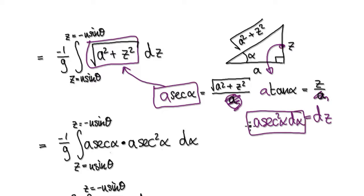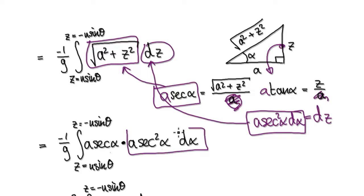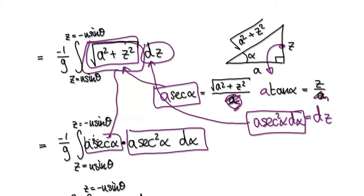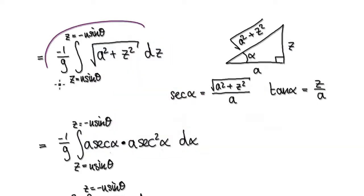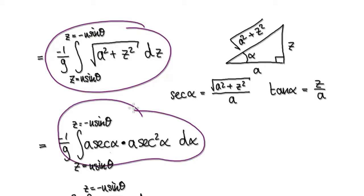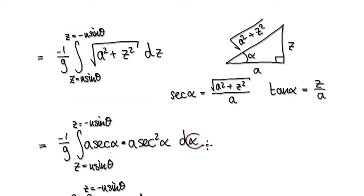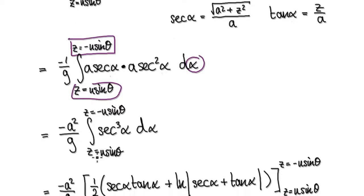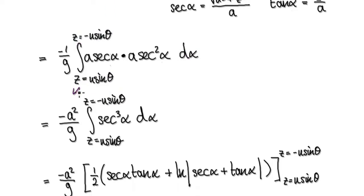So we can put this into the integral. The DZ becomes A secant squared alpha d-alpha, and the complicated square root simplifies to A secant alpha. From here that takes us to this expression. Bear in mind we are now working in terms of alpha, but the limits are still in terms of Z.